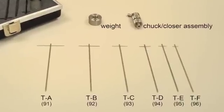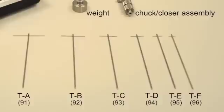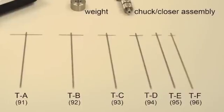TA has the largest diameter and can measure the lowest viscosity range, while TF has the smallest diameter and can measure the highest viscosity range.